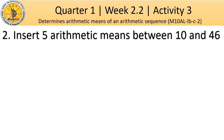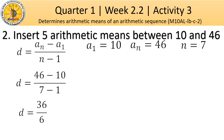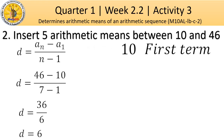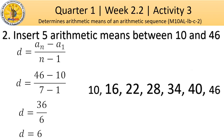Number 2: insert 5 arithmetic means between 10 and 46. To solve for the common difference: a_1 = 10, a_n = 46, n = 7. Substituting: 46 minus 10 is 36, and 7 minus 1 is 6, so d = 36 / 6 = 6. Starting from the first term 10 and adding 6 to find each next term, we get the 5 arithmetic means between 10 and 46: 16, 22, 28, 34, and 40.